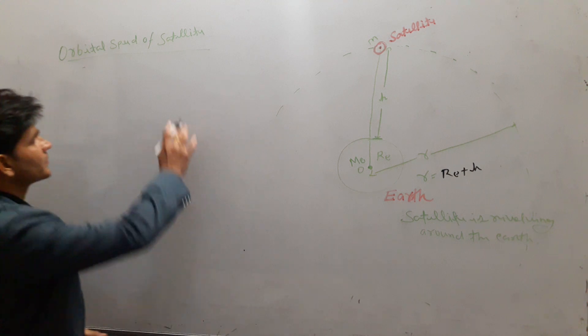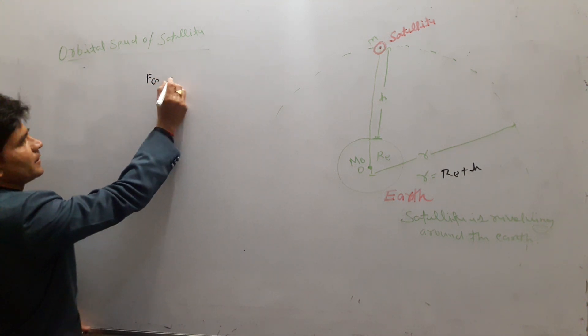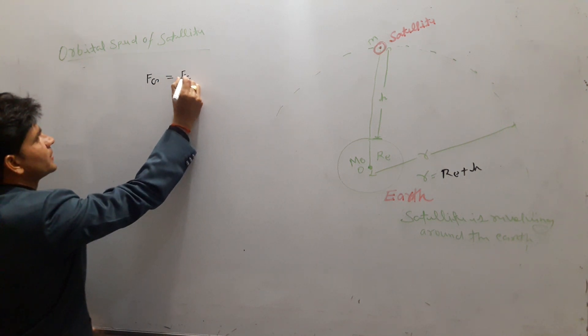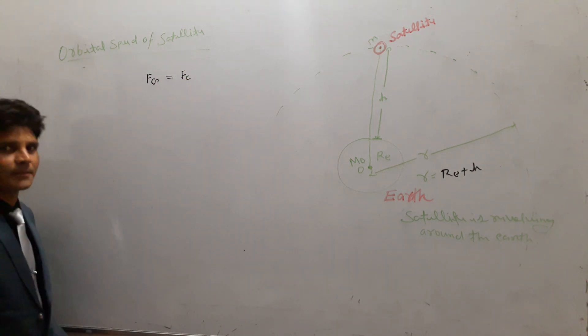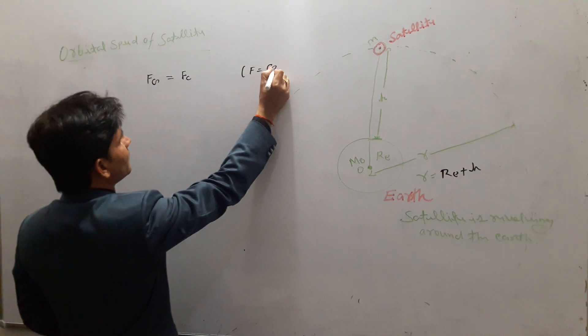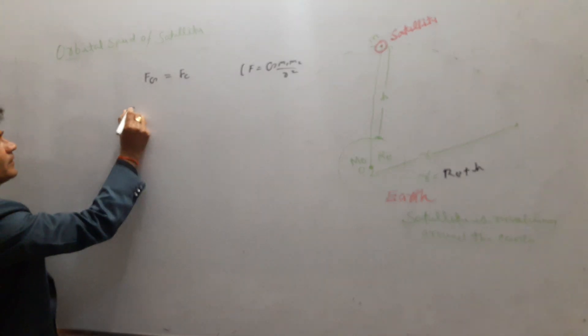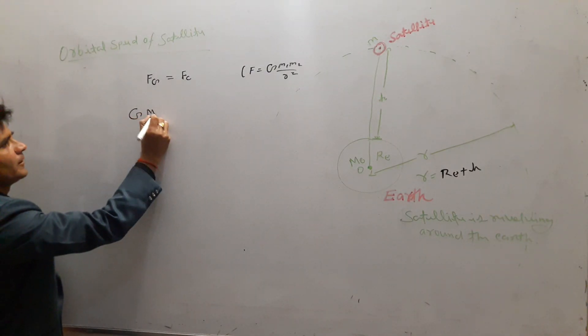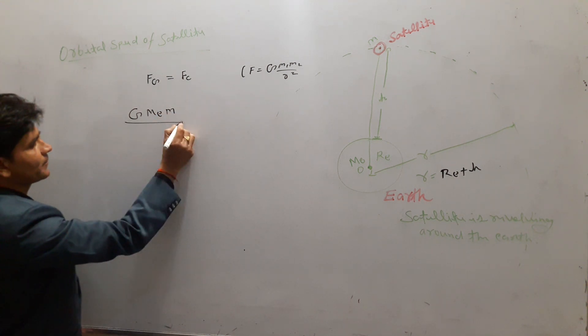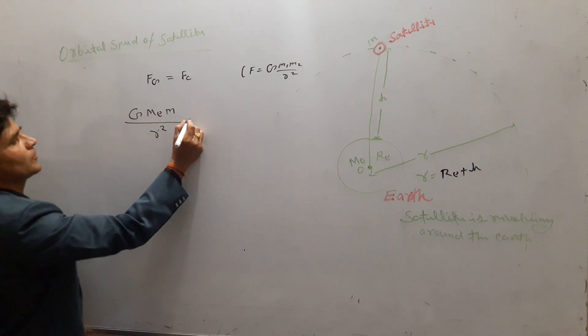So, using this concept, we can write that F_g, the gravitational force between the satellite and Earth, is equal to F_c, the centripetal force. The value of gravitational force is F = G × M1 × M2 / R². Here, the gravitational force is G × M_E as the mass of Earth × m as the mass of satellite, divided by the distance between them. The distance between them is r, so it is r squared.